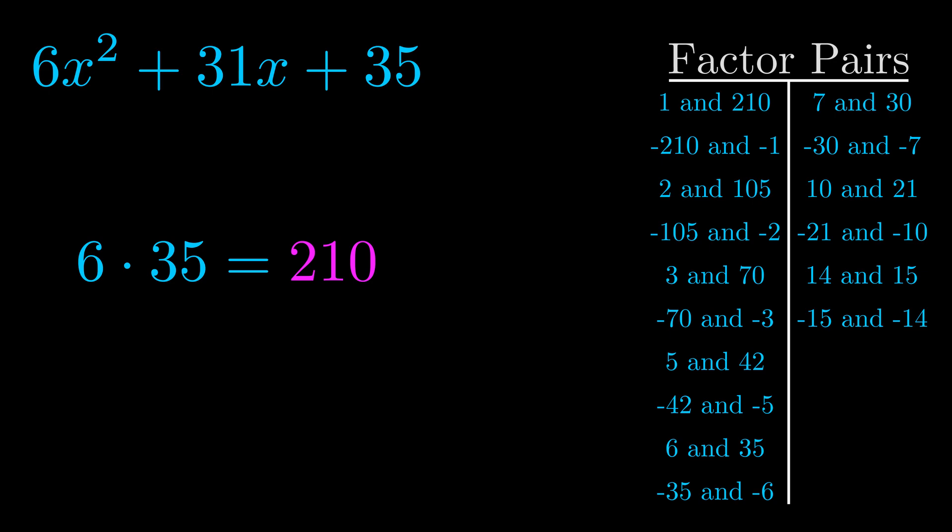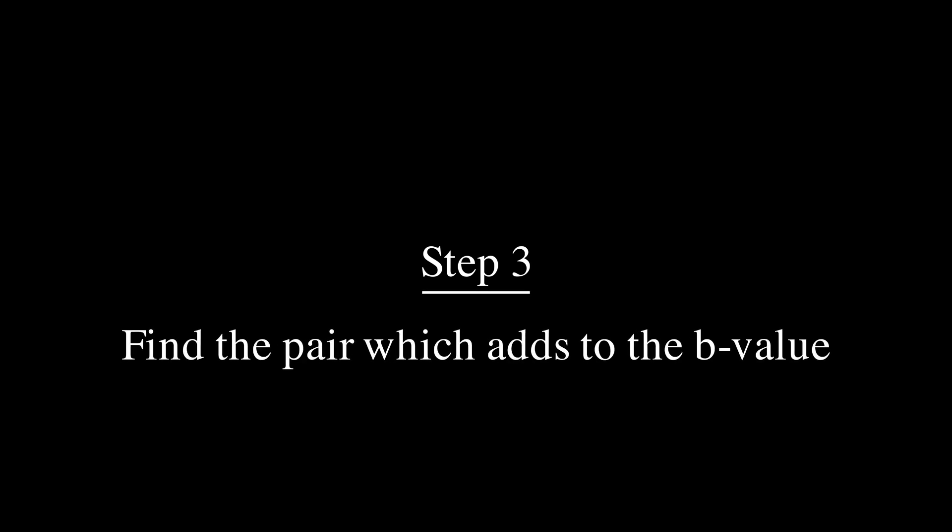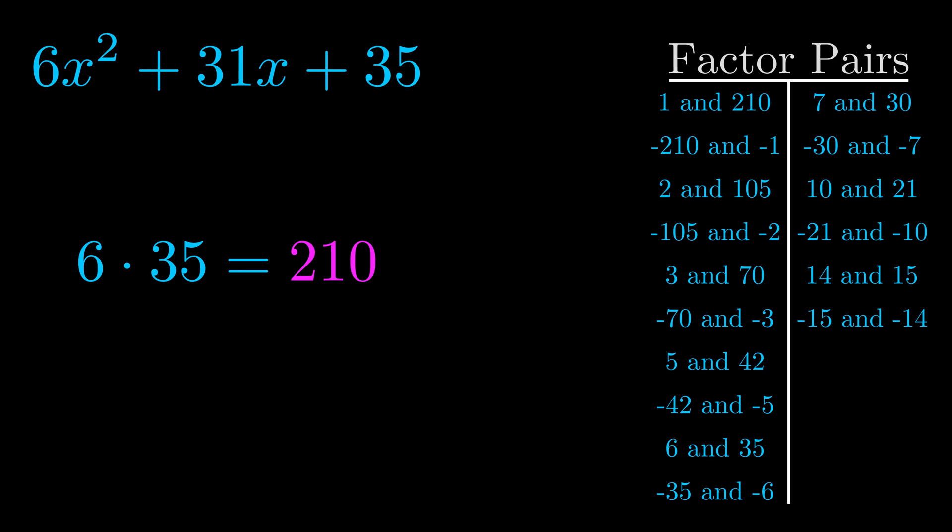Now once you have these factor pairs the goal is to find which of these pairs adds to the b value. The b value is the coefficient on the x term. That's the middle term, the one that we haven't done anything with yet.